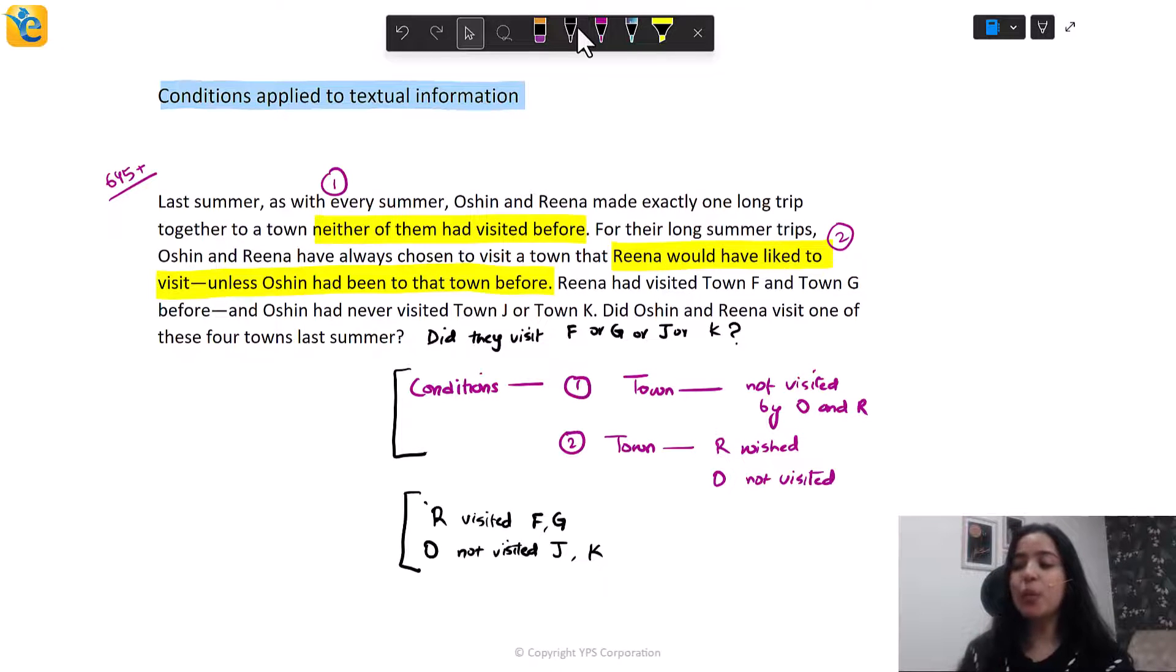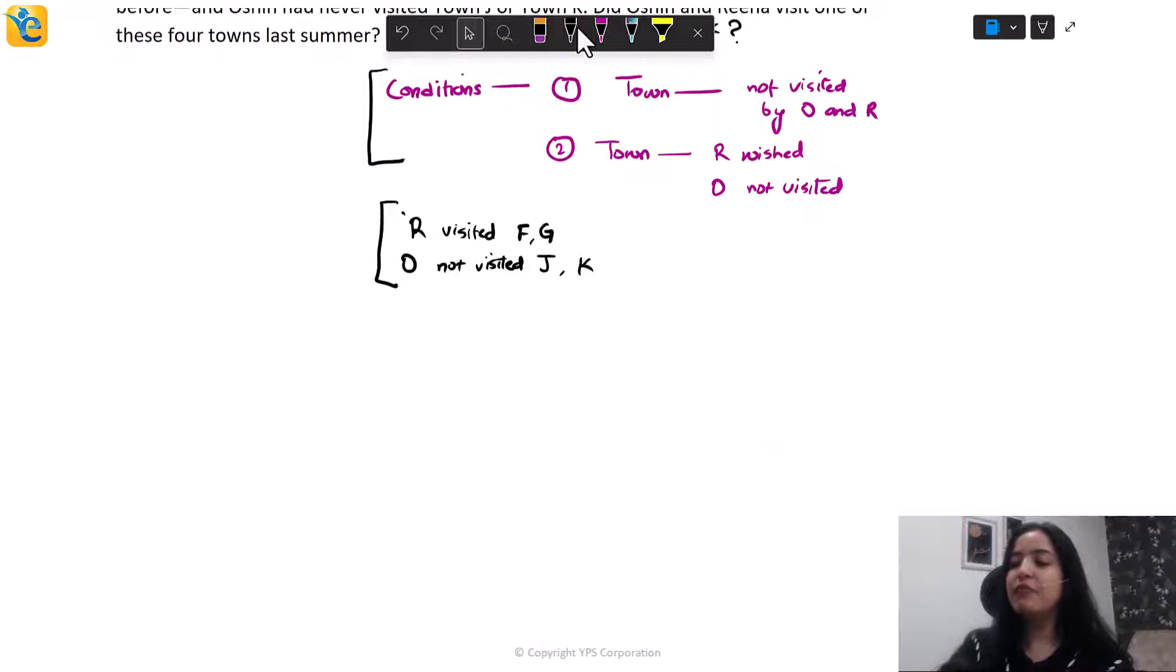So what do we have again? We have four towns here. I have F and G and J and K. Let's just see all the information we have. So I know about F that R has visited F. So what does this mean then? Because R has already visited F, F can't be the one they visited last summer because of the condition we have here. That this town should not be visited by O and R. I'm talking about the first condition here. F is out. Then you look at G. Same treatment for G. If R had already visited G, then G is not going to be the one for last summer. And this again came from the first condition only.